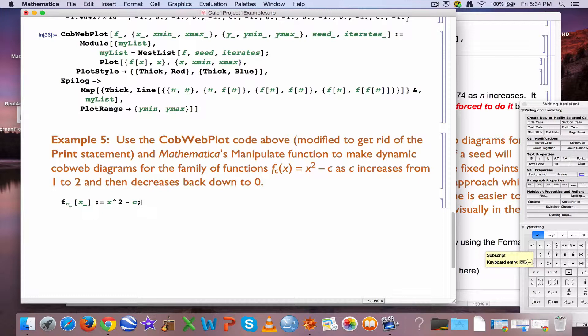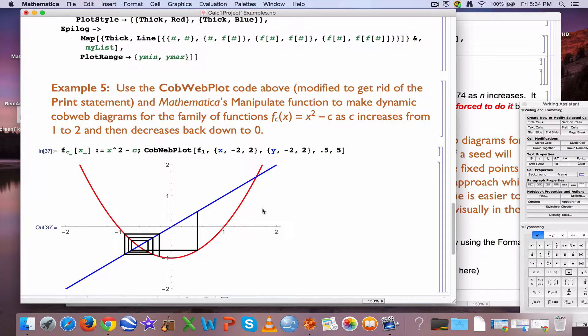I can use the cobweb plot code to, for example, iterate this function for a particular value of c, like c equals 1. So I could put an f1 in there. I could pick a range of a window for x and y like this, that's how the syntax works. I can give the seed, like 0.5 for example, and a certain number of iterates like 5. And here's a static diagram.